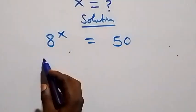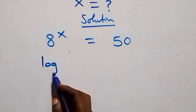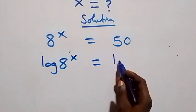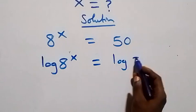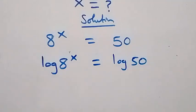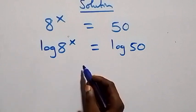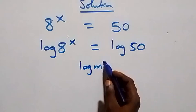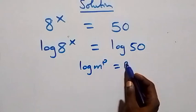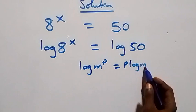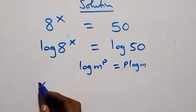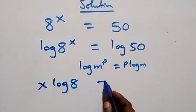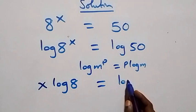That is, we have log 8 raised to power x equals to log 50. The next step, we apply the power law of logarithms: when we have log m raised to power p, it is the same thing as p log m. That is, here we have x log 8 equals to log 50.